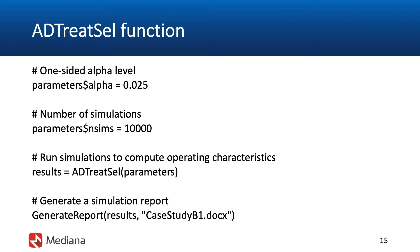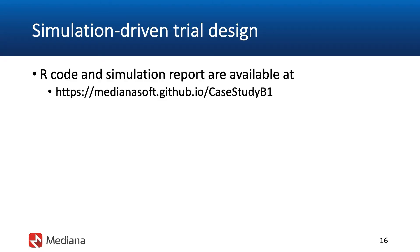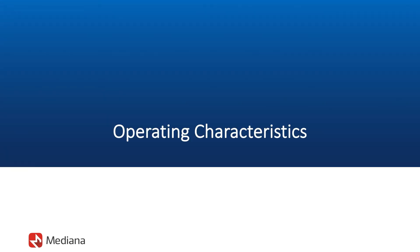The results object is then passed to the GenerateReport function, which generates a simulation report saved as a Word document named 'casestudyb1.docx'. The R code and simulation report generated by the ADTreatSelect function are available for download via the link shown on the slide, allowing users to inspect or modify the code. We are now ready to review the simulation report for this case study.